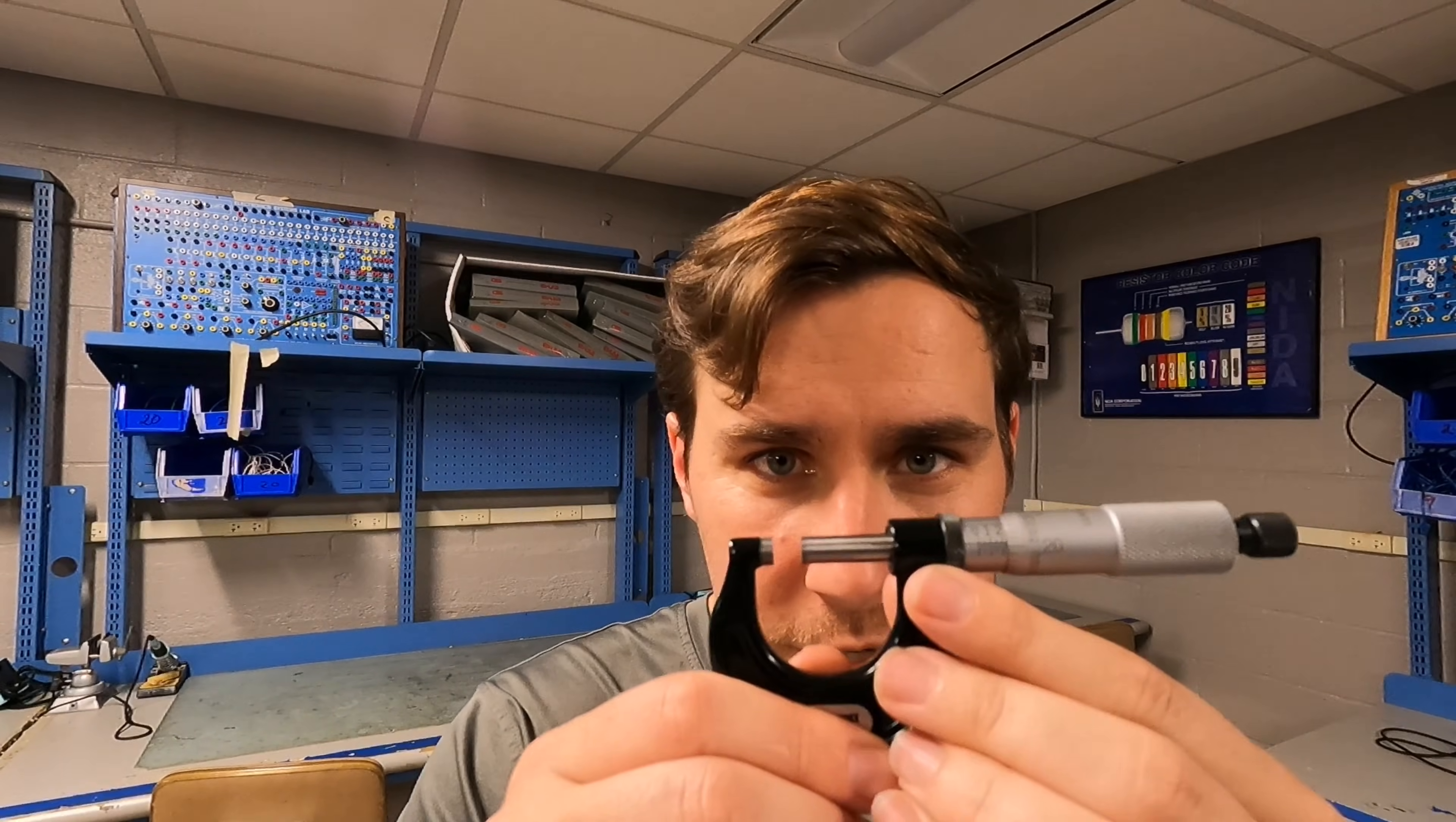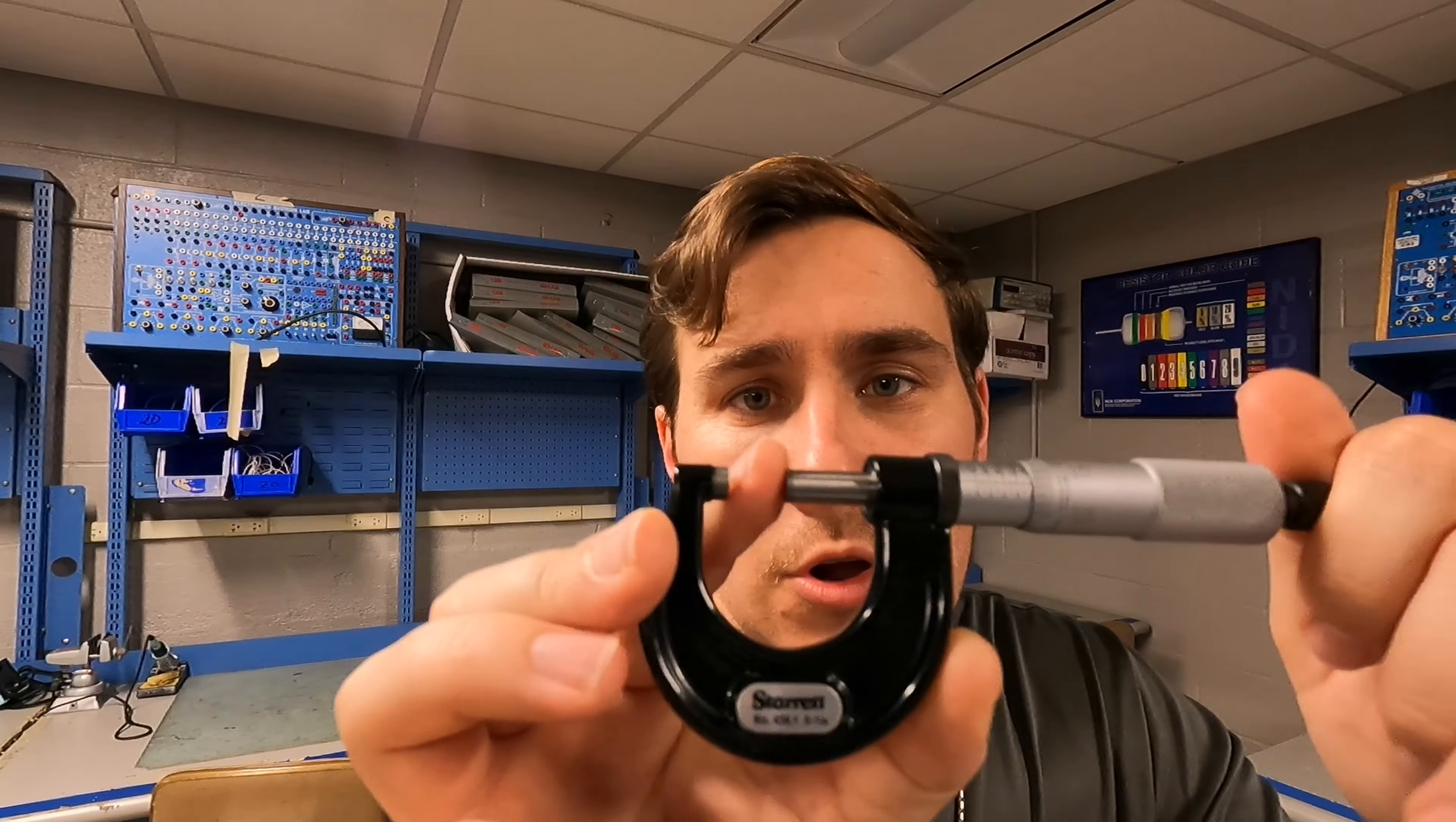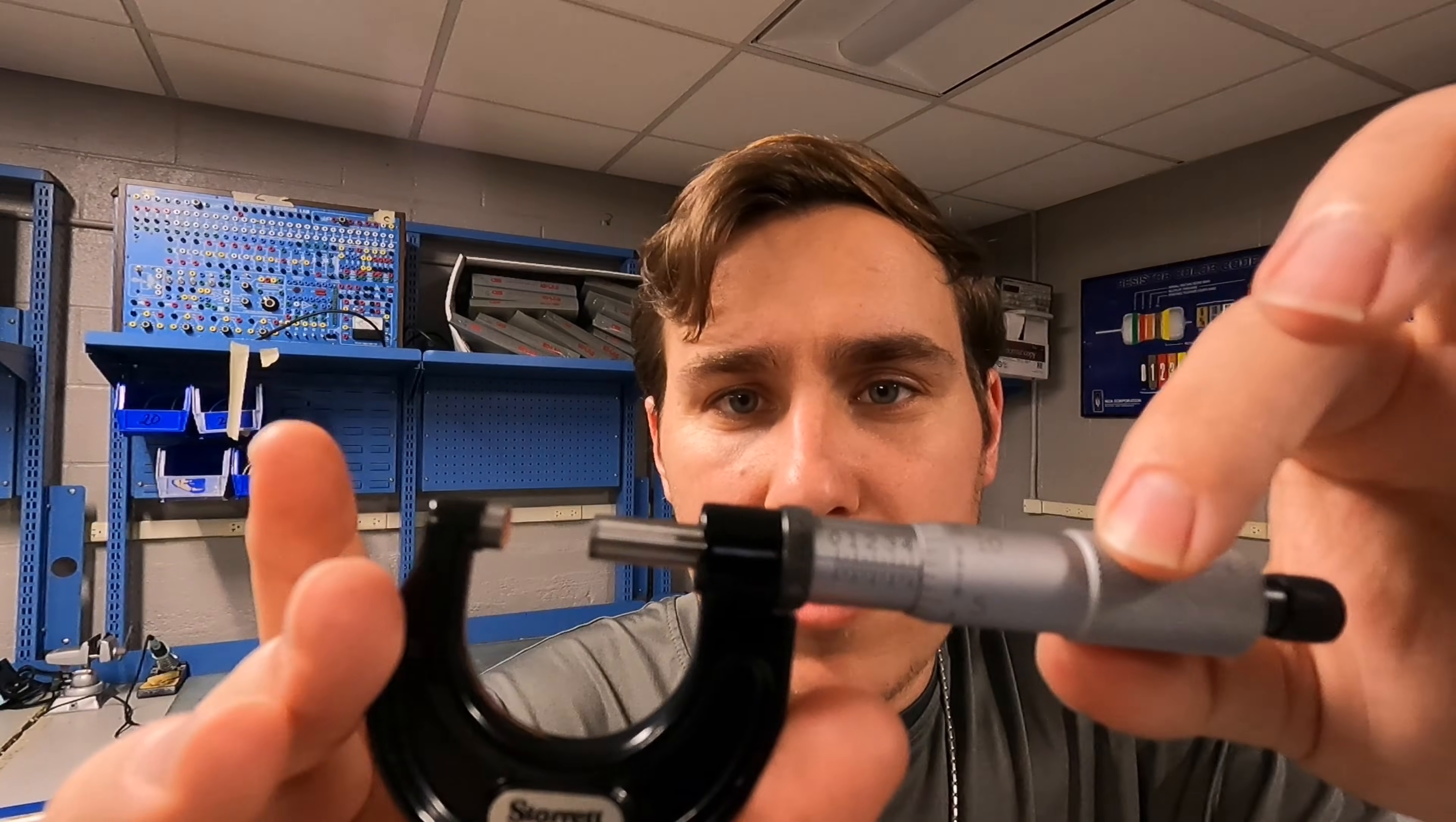Now, before I get too far into this, I would like to address some of how the micrometer works. No, it is not a calibrated C-clamp as my students so often like to call it, but you have your thimble here, you have your barrel here, and then you would place your work or whatever it is you're trying to measure right here. Now, they only measure about an inch at a time for an outside micrometer, which is what this one is. So if I were to run it down and measure, say, the thickness of my finger, you then have a lock that you can lock in place so that you can no longer turn this.